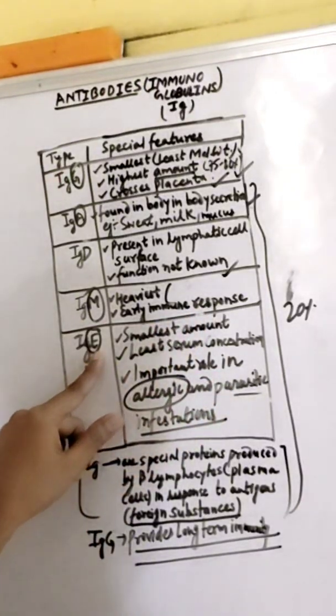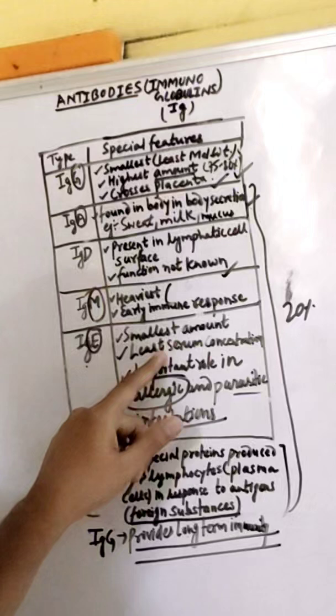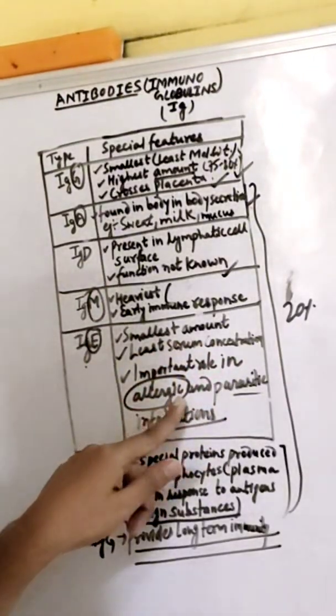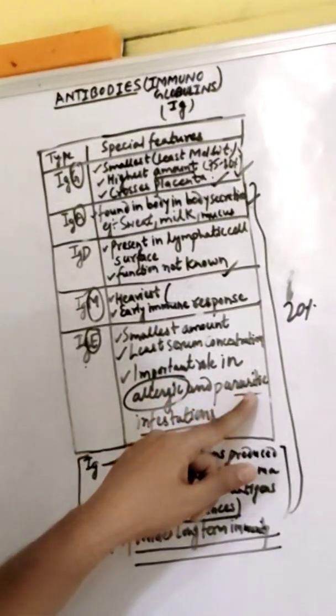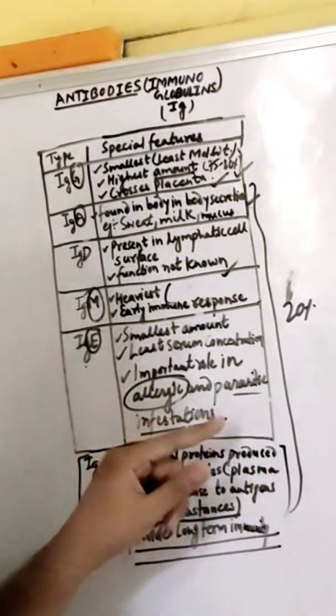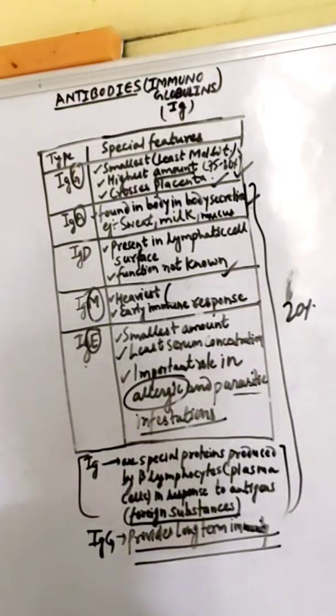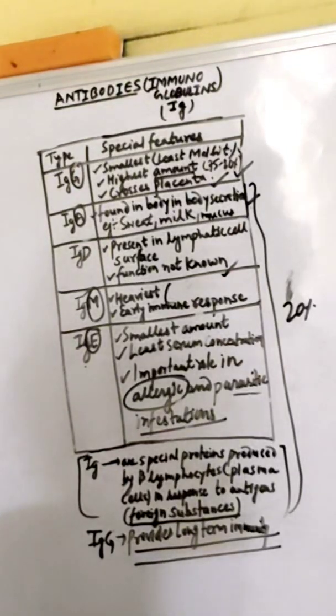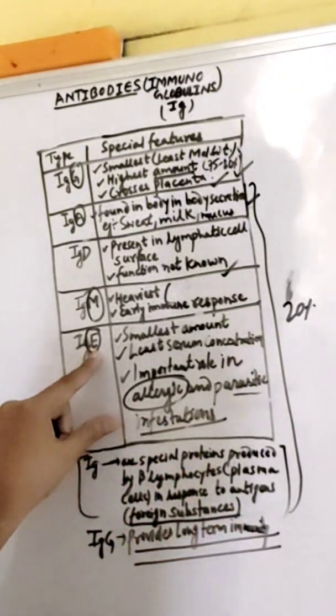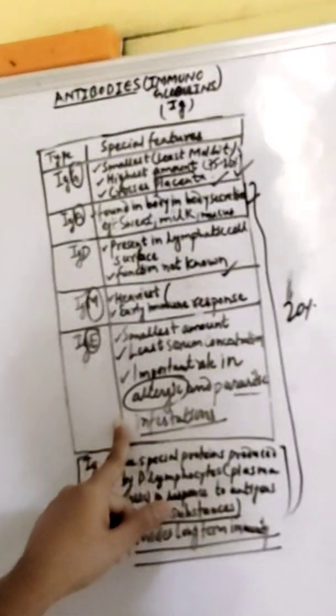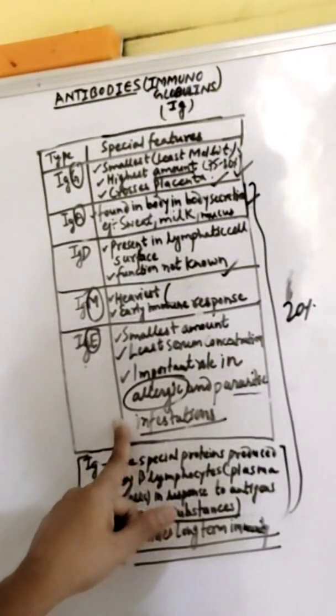IgE is found in the smallest amount with the least serum concentration, but it has an important role in allergy and parasitic infestation. If someone is suffering from allergy, we provide antihistamine tablets. It provides protection against allergic reactions to foreign substances.